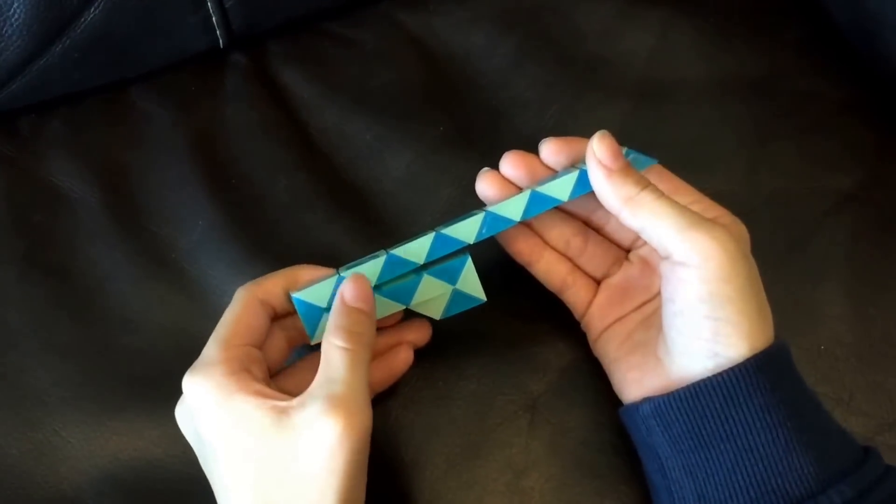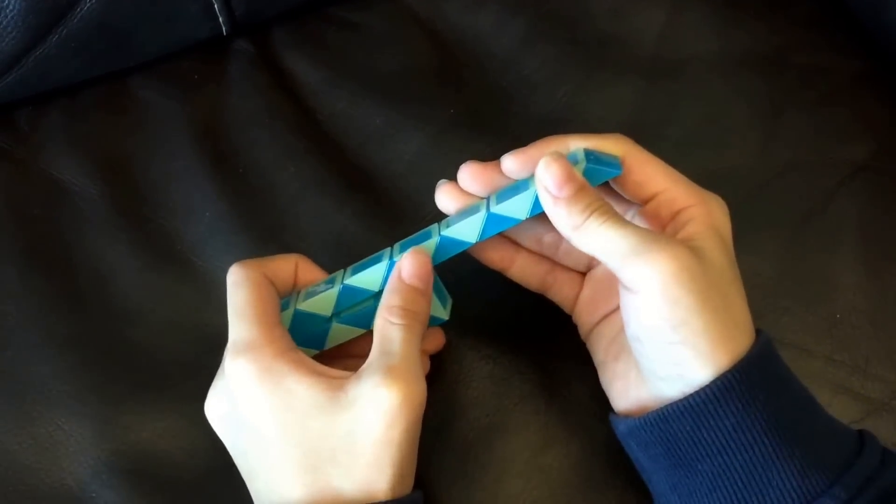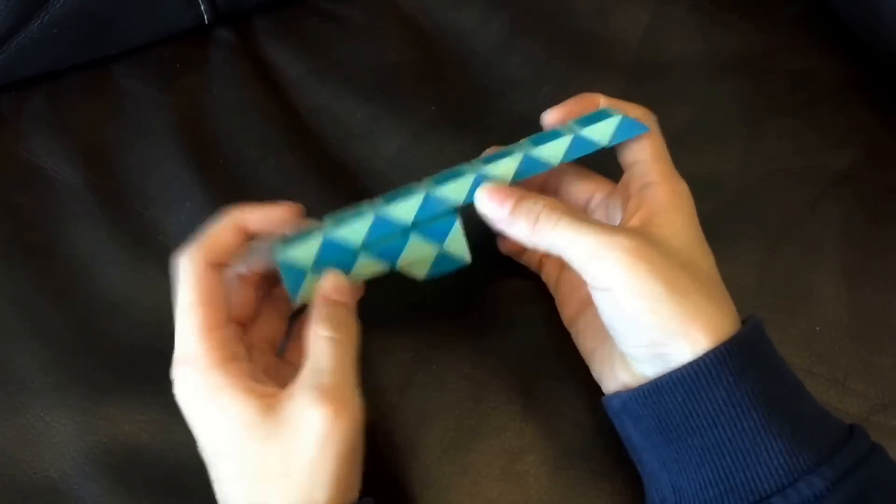Now you're going to count one, two, three, four, five, six, seven, and then this blue one is going to go down.